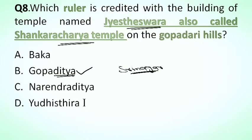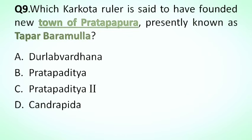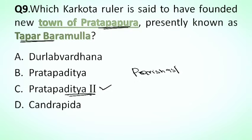Our next question is: which Karkota ruler is said to have founded the new town of Pratapura, presently known as Tapar in Baramula? Options: A. Durlabhavardhana, B. Pratapaditya I, C. Pratapaditya II, D. Chandrapida. The correct answer is option C, Pratapaditya II. He laid the foundation of Pratapura in Tapar. And Lalitaditya laid the foundation of his capital Parihaspura, also in Baramula district.